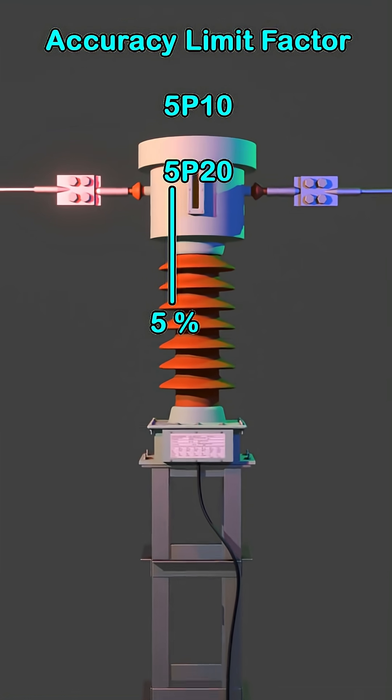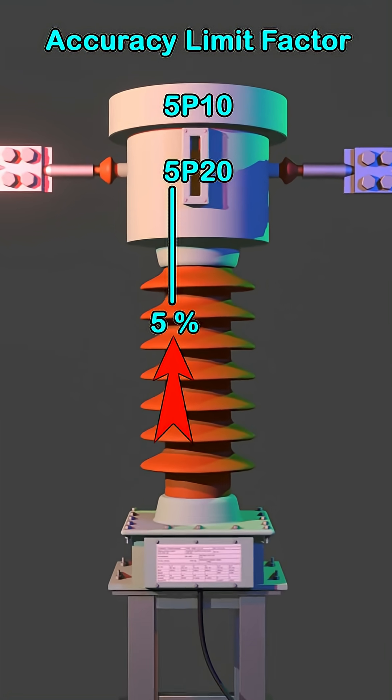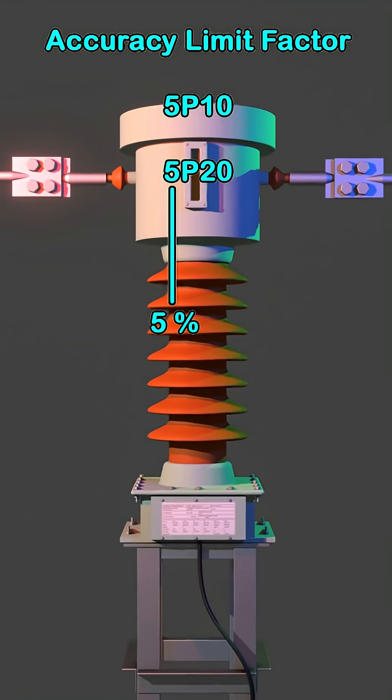Why is it called the accuracy limit current? Because the accuracy of the CT here, 5%, is maintained up to its maximum specified value within that accuracy limit current.